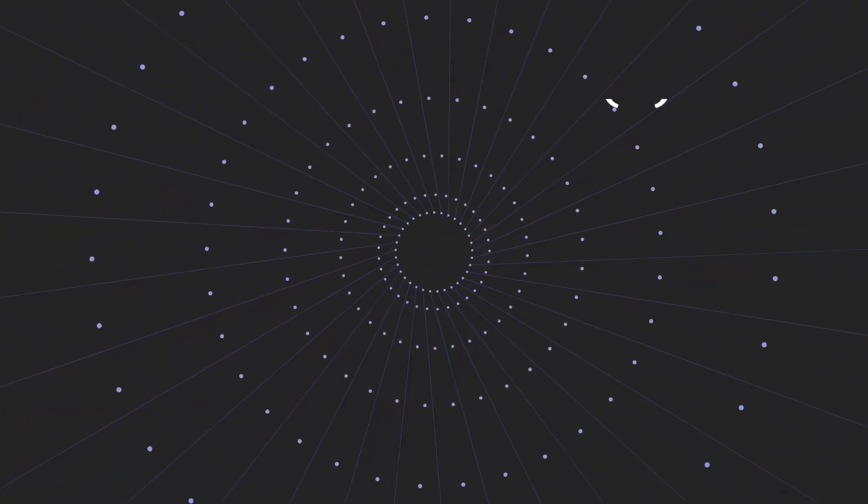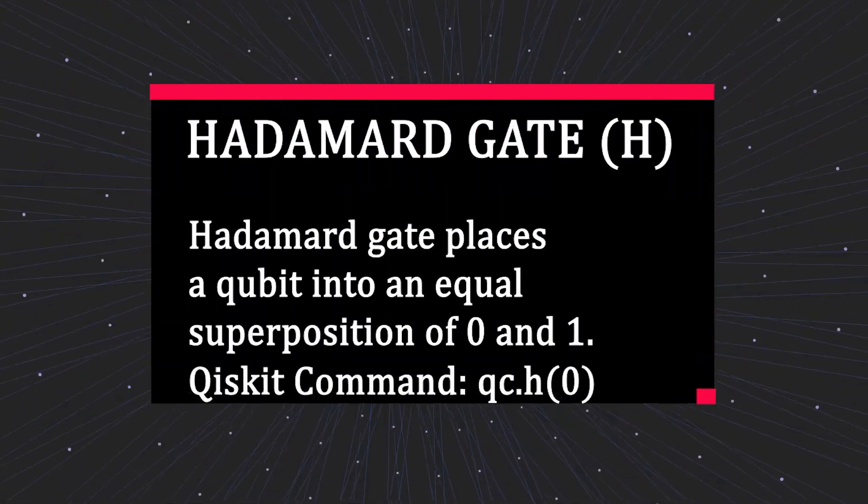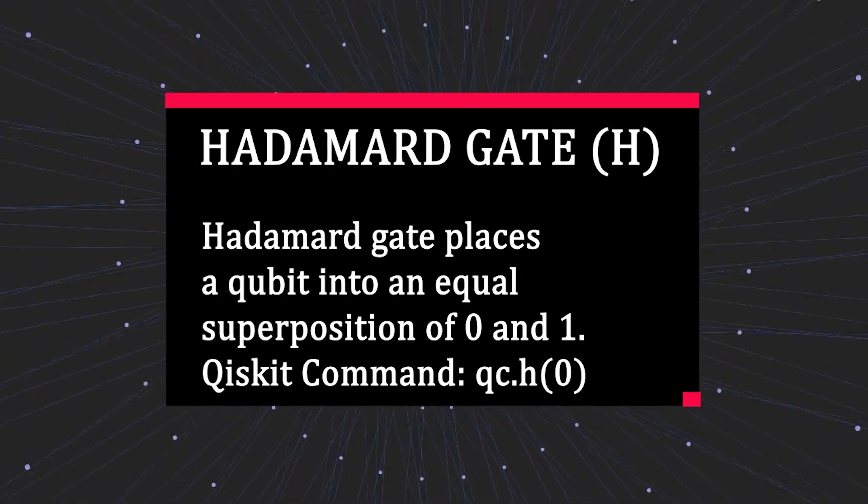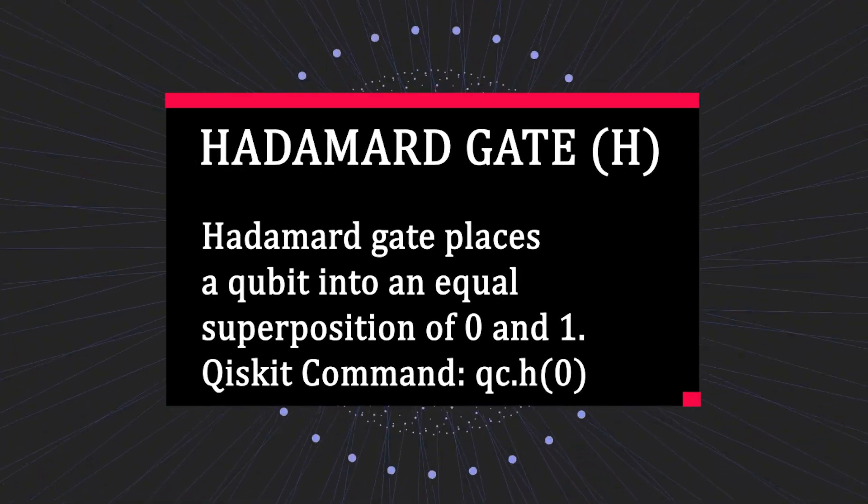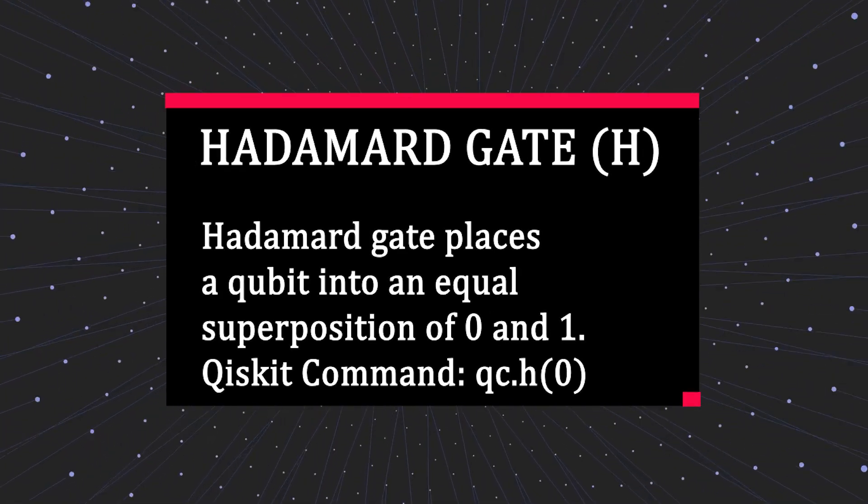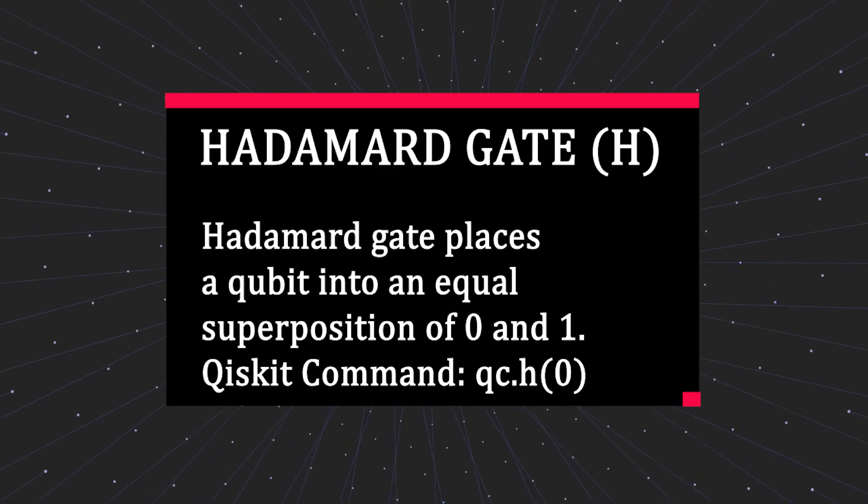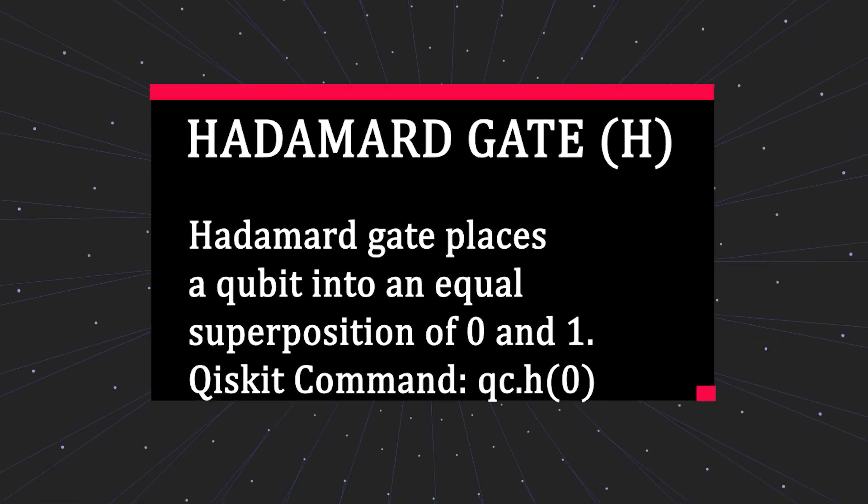Here are the most common single qubit gates you'll encounter. Number one: Hadamard gate, often denoted by the letter H. The Hadamard gate places a qubit into an equal superposition of zero and one. You can think of this like flipping a coin into a perfect 50/50 state. Until you look at it, the coin is both heads and tails.